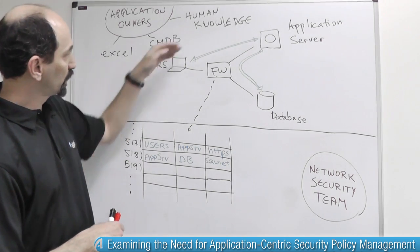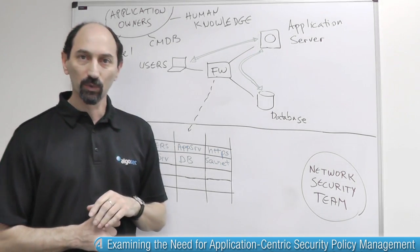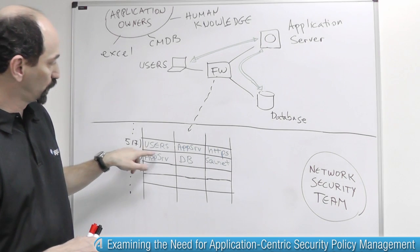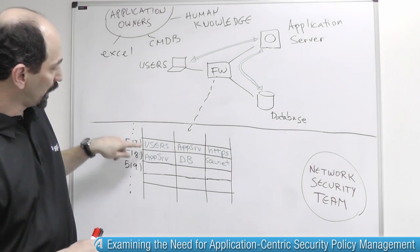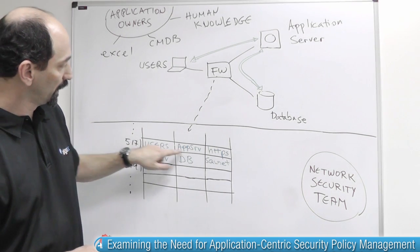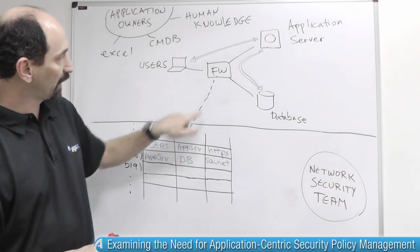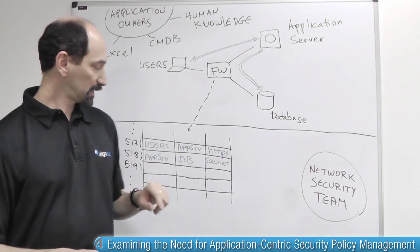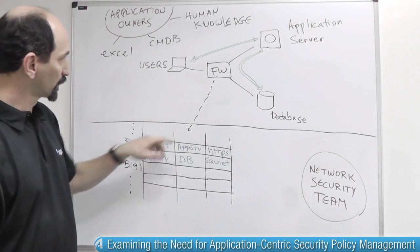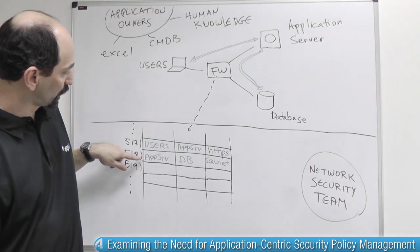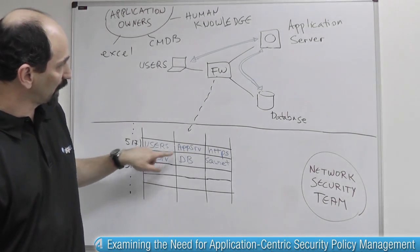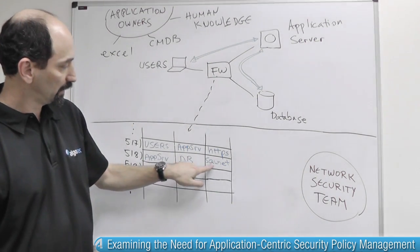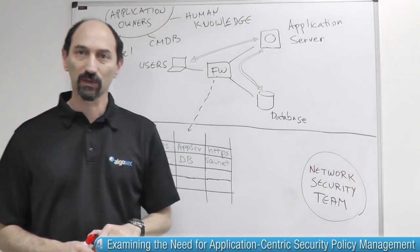In this case, we have these two blue communication patterns and we can see that there are two rules: one allowing traffic from the users group to the application server using HTTPS, and then there's another rule allowing traffic from the application server to the database using some other service.